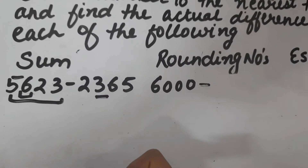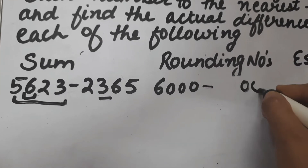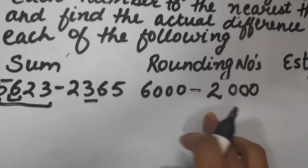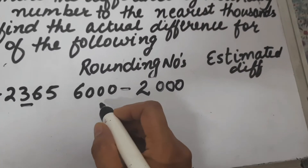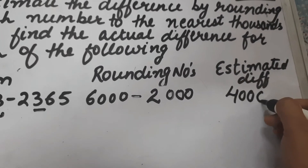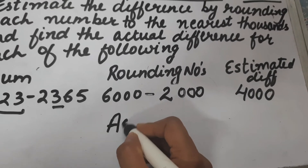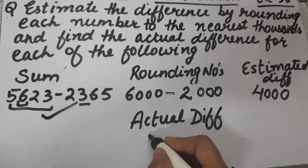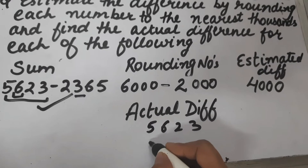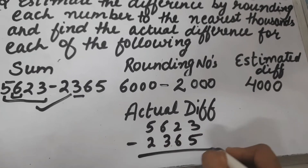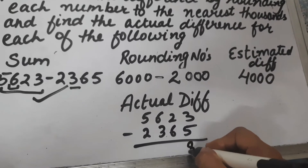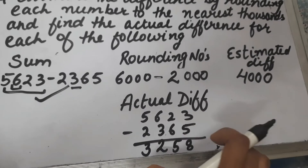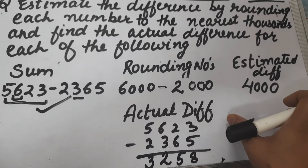Next is 2,365. The hundreds place is 3, which is less than 5, so ones, tens, and hundreds place will become zero and there will be no change at thousands place, so it will be 2,000. The estimated difference is 6,000 minus 2,000 equals 4,000. For the actual difference: 5,623 minus 2,365 equals 3,258.